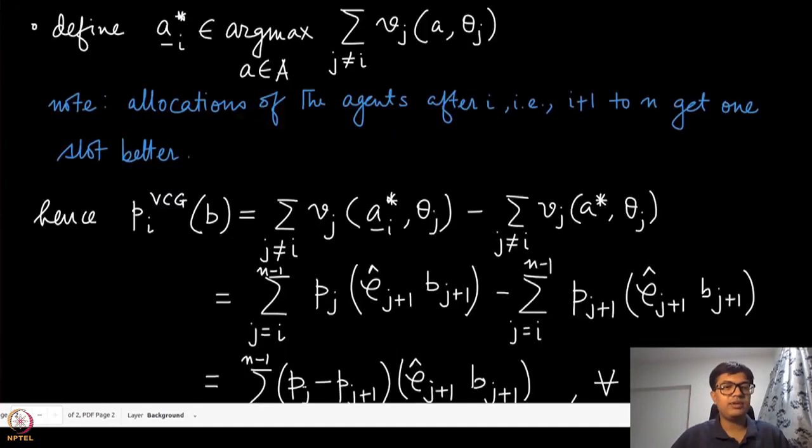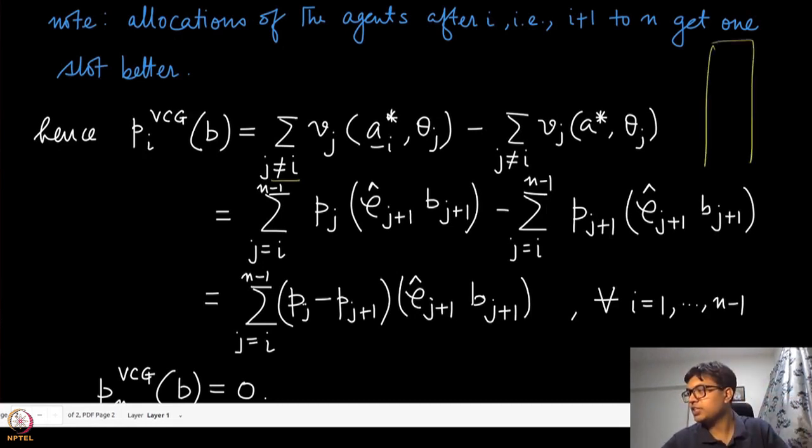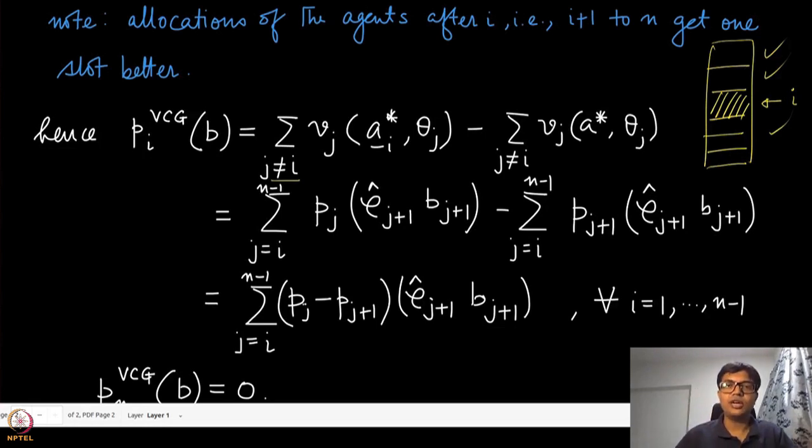We can write down the payment under this VCG mechanism in the following way. As before, we have all this j not equal to i's. So imagine in this allocation list, suppose this was the position of agent i. We are considering when agent i is present versus when it is not present, but we are only summing the valuations of all the agents except agent i. Therefore, it will not consider this agent's valuation at all. It will only look at the agents above it and also the agents that are allocated slots below it. Now if we look at the allocation where agent i is not present, that means all the agents which were allocated after i actually move one position above.